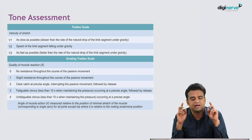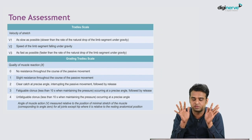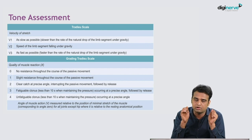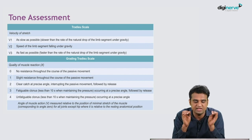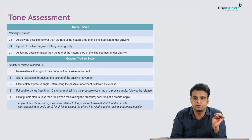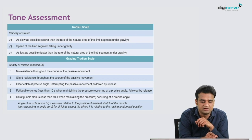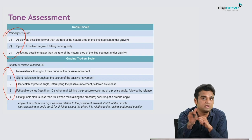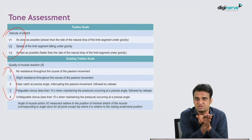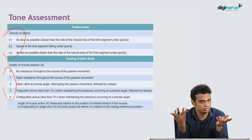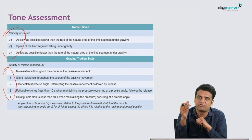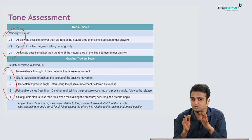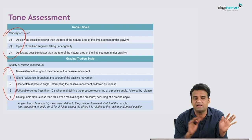The Tardieu scale is far more sensitive than Ashworth because it includes both velocity and quality of muscle reaction. It assesses not only the degree of resistance but also at what velocity the resistance appears — reflecting the velocity-dependent nature of spasticity. The Tardieu scale is more useful, but the Modified Ashworth scale is easier and perfectly acceptable to use in clinical staging.